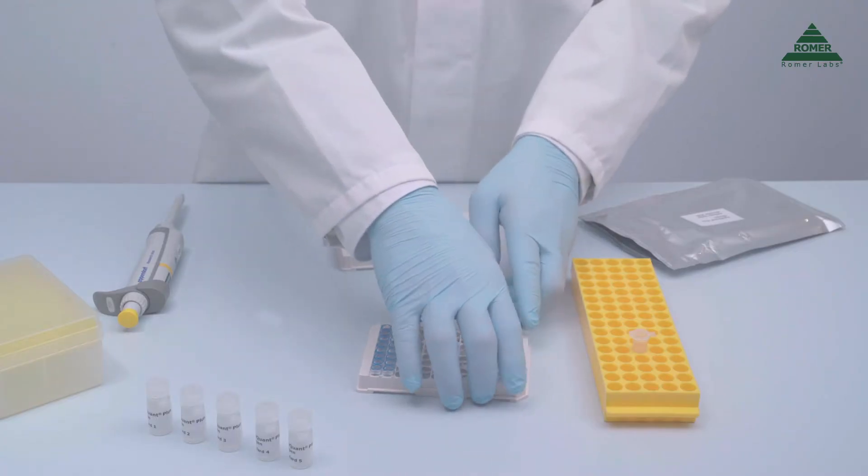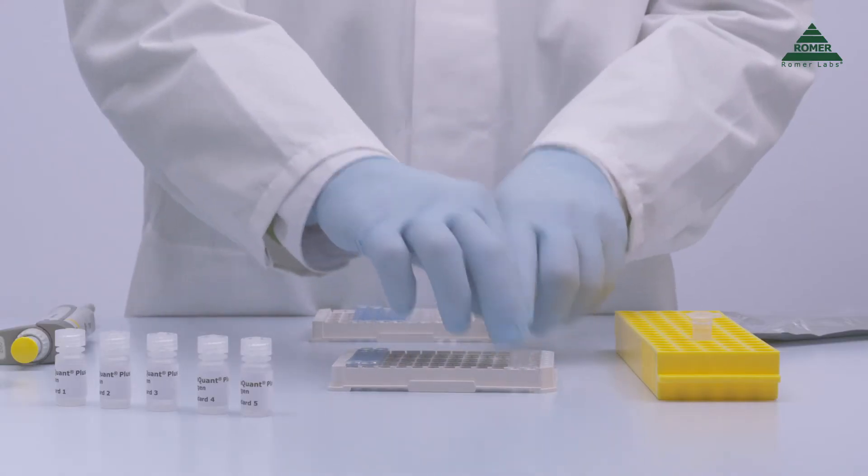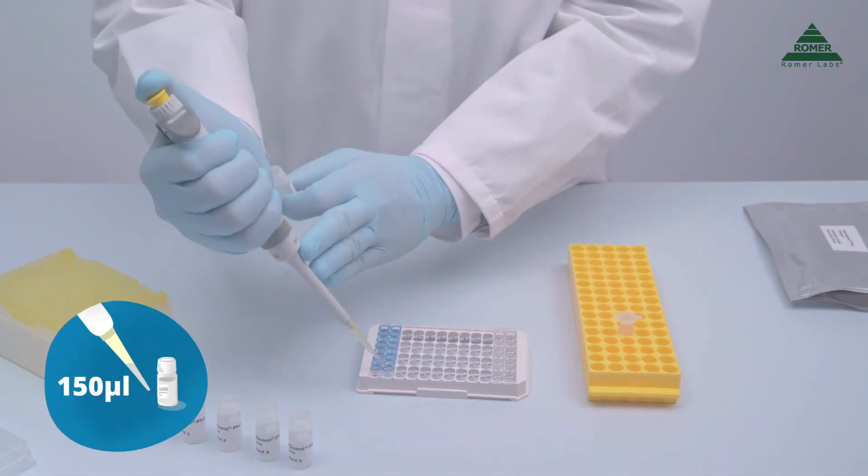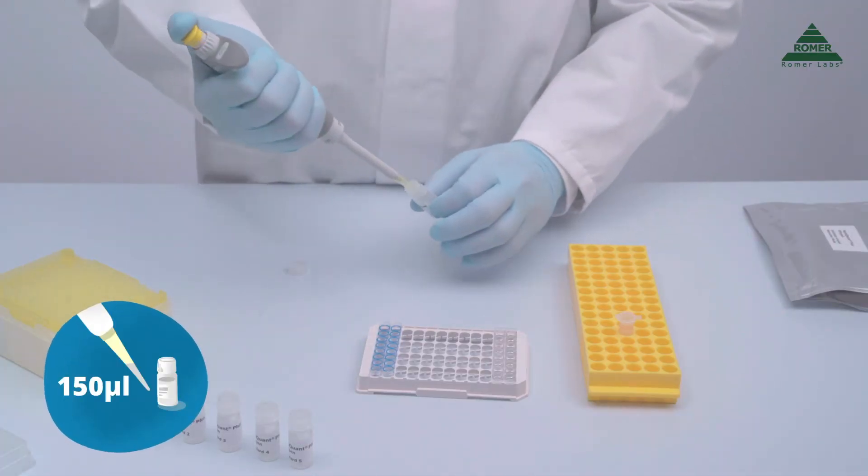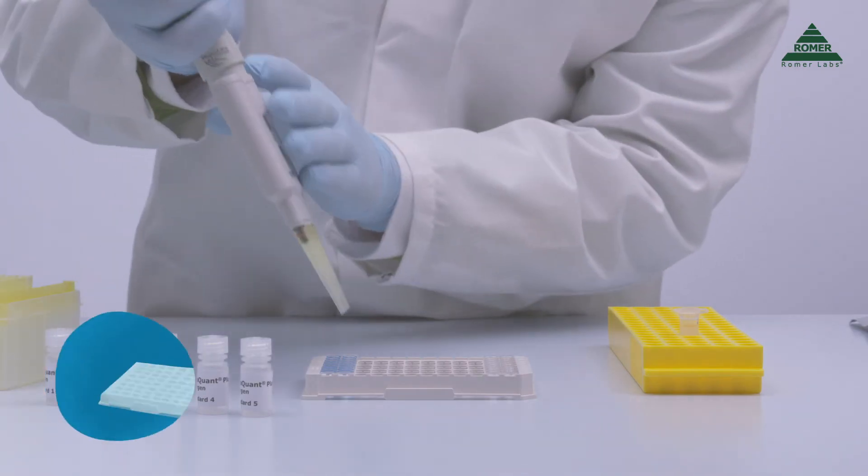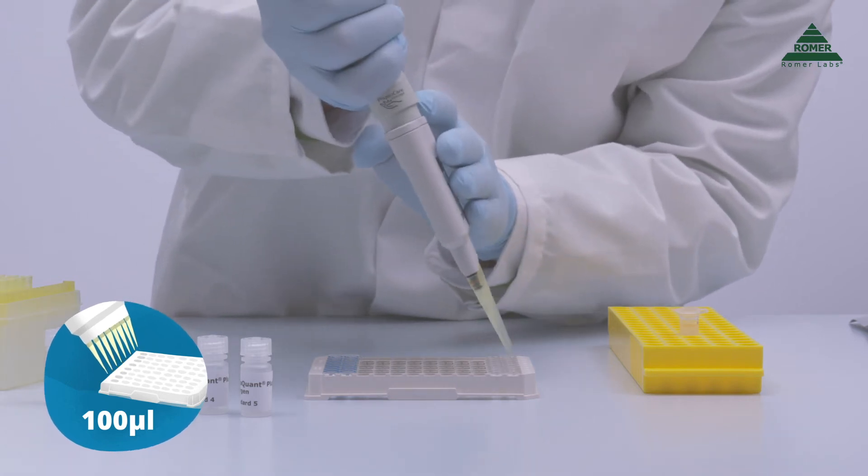Remove the necessary amount of antibody-coated microwell strips from the foil pouch and place them in the microwell holder. You can break the strips if needed. Pipette 150 microliters of each standard and prepared samples into transfer wells and then transfer 100 microliters of each into the antibody-coated wells with a multi-channel pipette.